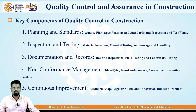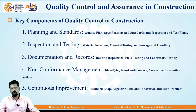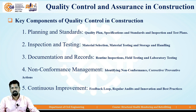These are some key points of quality control in construction. The first point is planning and standards. Whenever we start any project, we have to plan for the quality of that project — preparation of a quality plan, specifications and standards, and an Inspection and Testing Plan, which we call ITP. ITP plays a very important role during execution; we test materials which are fixed in the specification and used in execution of that project.